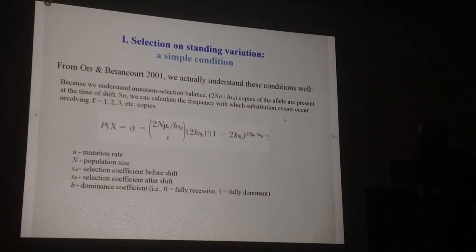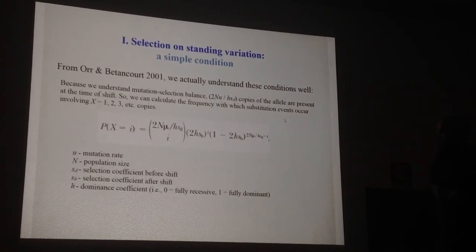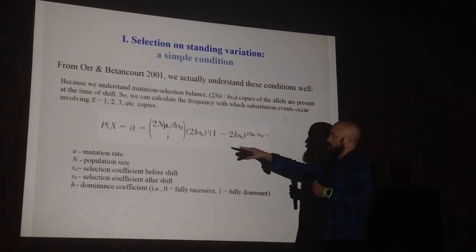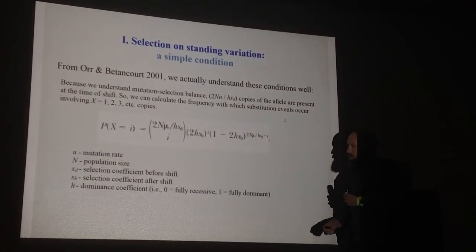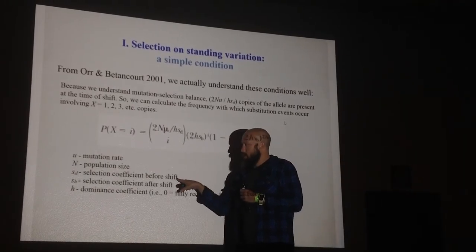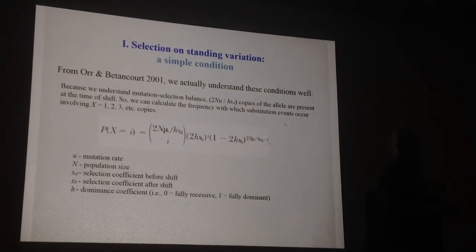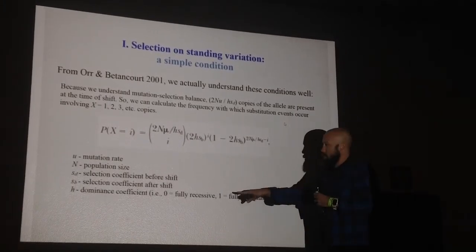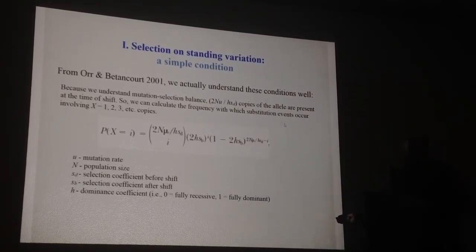We know something about this model actually quite a bit, starting from Warren Bettencourt, and Hermisson has done a lot of nice work on this over the years. The number of haplotypes at the time of fixation—the key parameters here that we'll focus on are the selection coefficient before the shift, that is when this thing was segregating in the population, how deleterious was it or was it neutral, and the selection coefficient after the shift, that is how beneficial did it become after the shift in pressure.